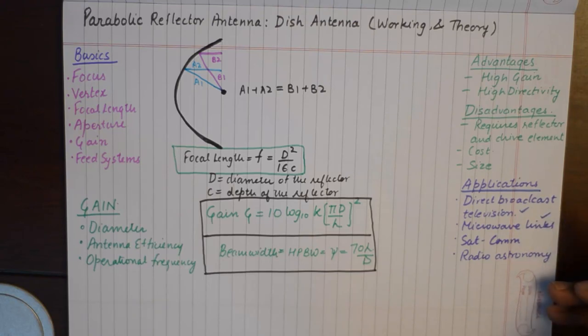They're used in microwave links in the range of gigahertz, in satellite communication, and radio astronomy. The size of these antennas become extremely large when we talk about using them in satellite communication.